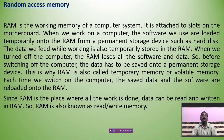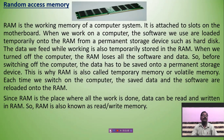The next type is Random Access Memory. RAM — Random Access Memory — is the working memory of a computer. It is attached to slots on the motherboard. It is a small chip in the motherboard and there is a slot in the motherboard for it. When we work on a computer, the software we use is loaded temporarily onto the RAM from a permanent storage device such as a hard disk.